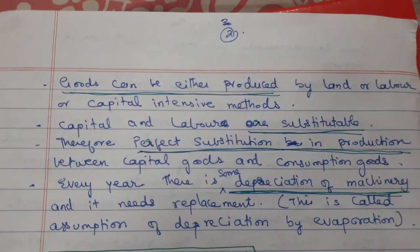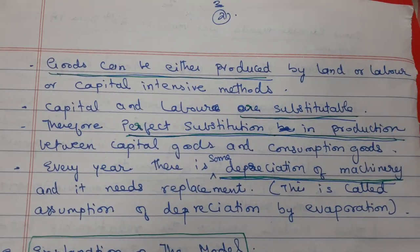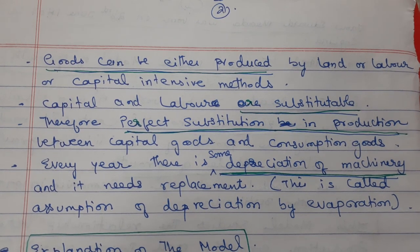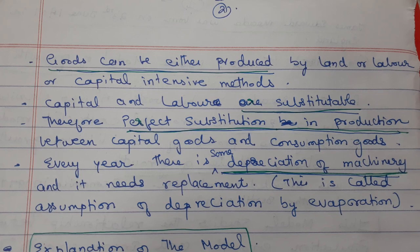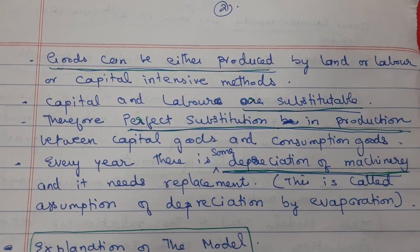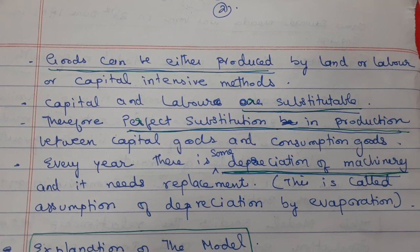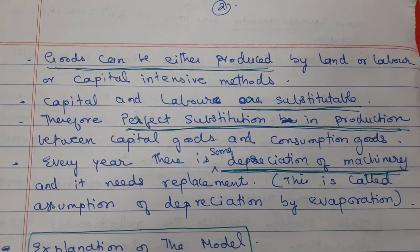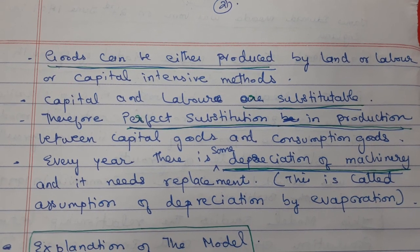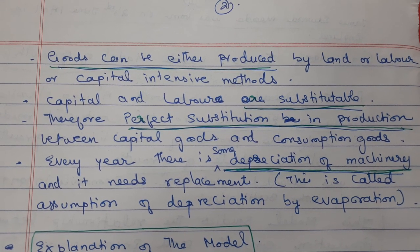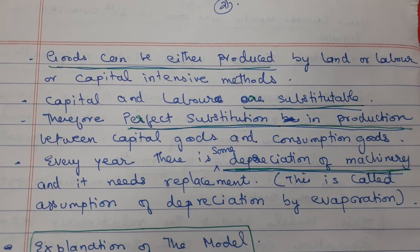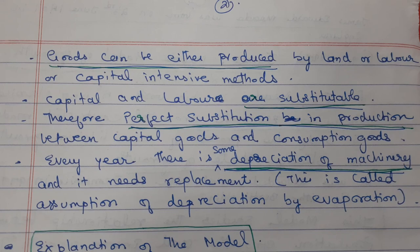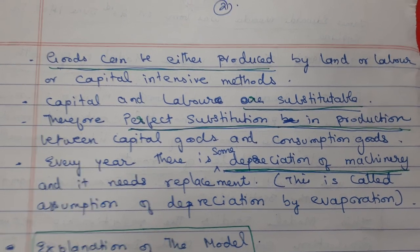Goods can be either produced by land, labour, or capital intensive methods. Capital and labour are perfectly substitutable in production, and there is also perfect substitution in production between capital goods and consumption goods. Every year there is some depreciation of machinery and it needs replacement. This is called the assumption of depreciation by evaporation.